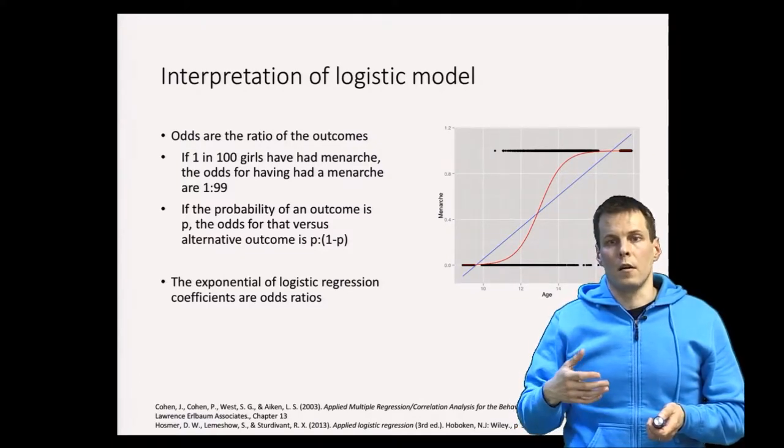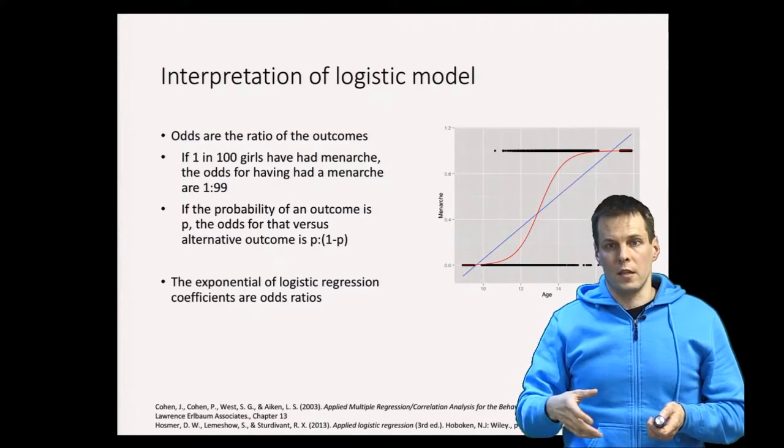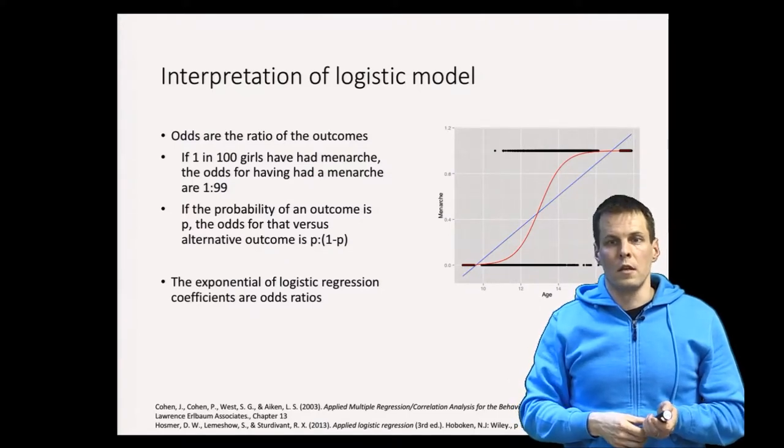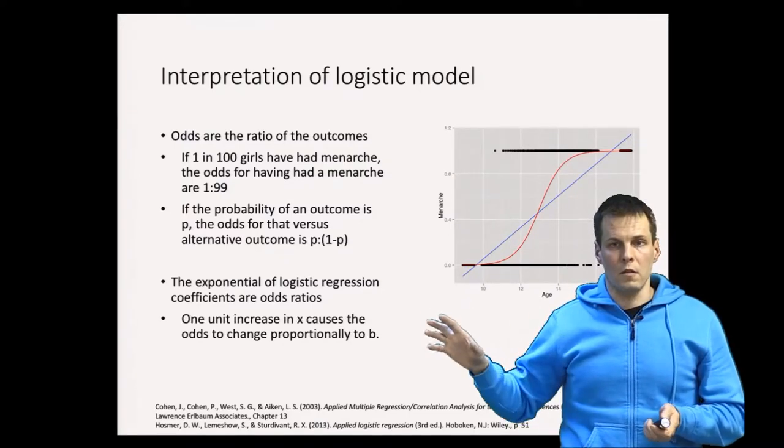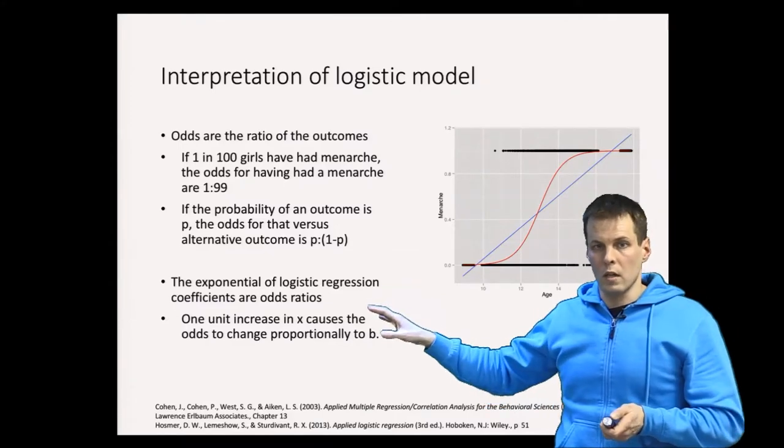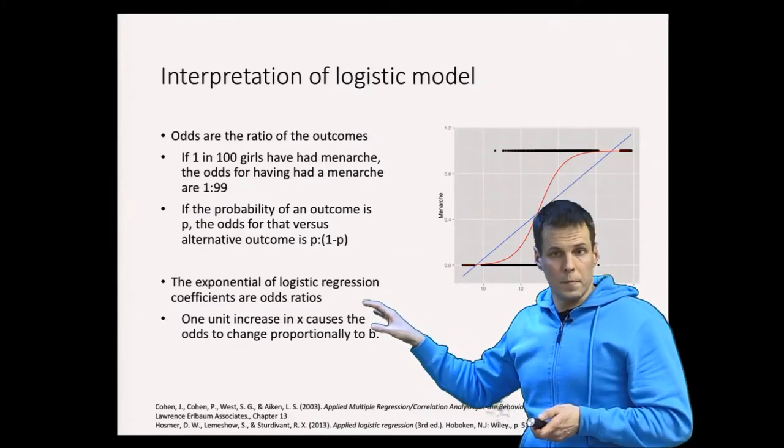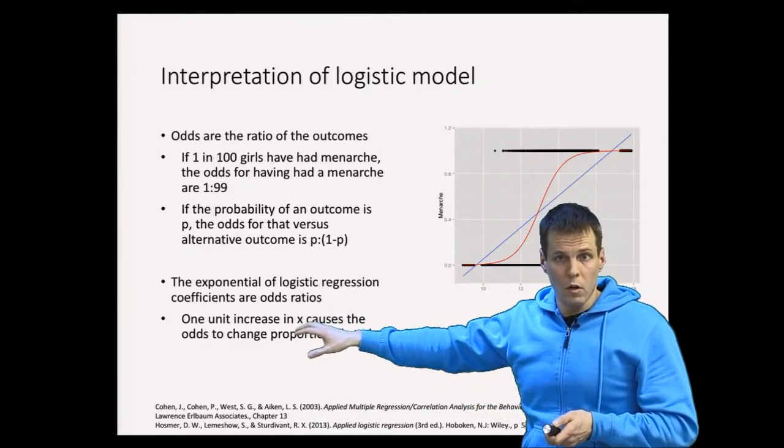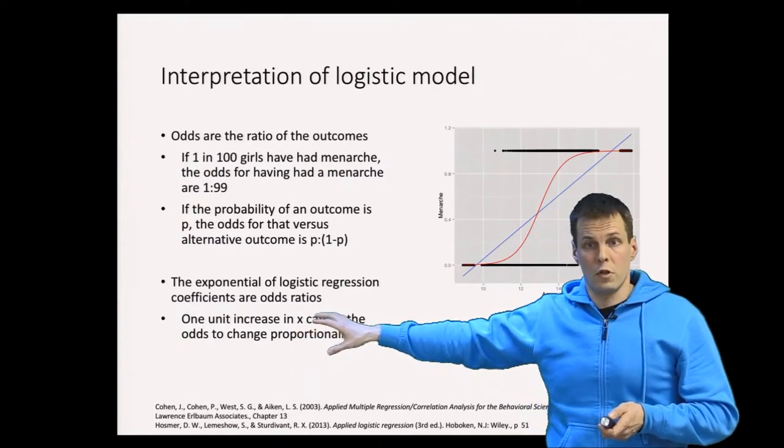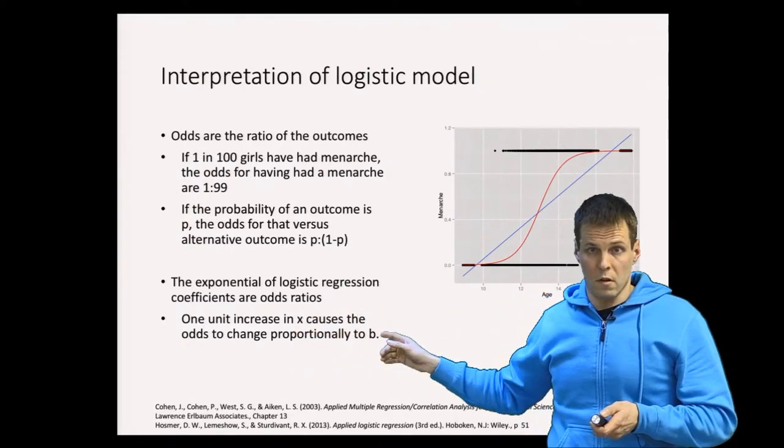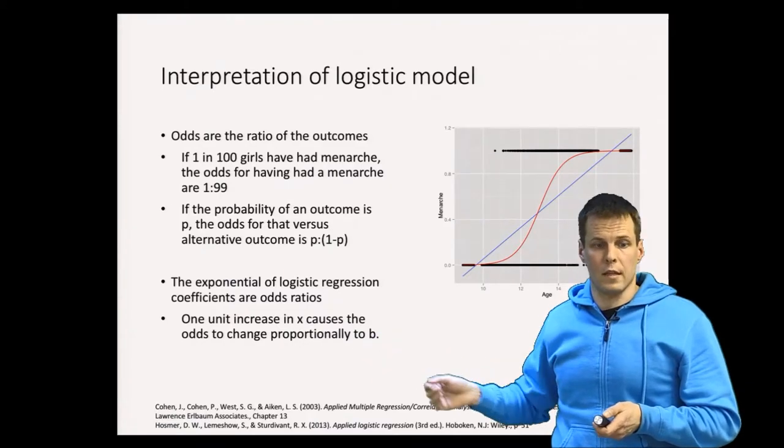And the idea is that when you exponentiate the coefficients, then the coefficients tell you that one unit increase in independent variable causes the odds to change proportionally to the regression coefficient. I'll show you an example.